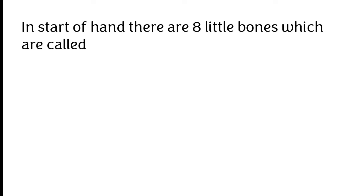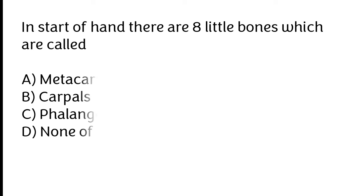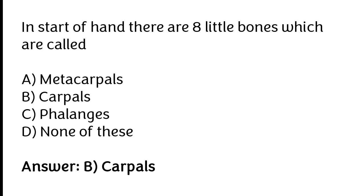In the wrist of the hand, there are eight little bones which are called: metacarpals, carpals, phalanges, or none of these. The correct answer is option B. In the wrist of the hand, there are eight little bones which are called carpals.